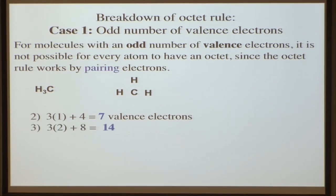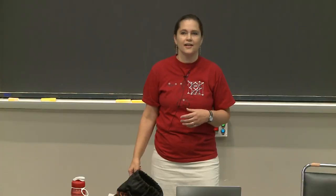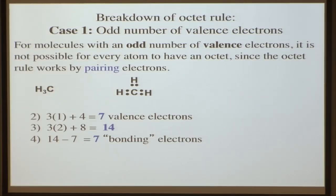To complete our octets — remember hydrogen is an exception, it only needs two electrons. There are three hydrogens, that's six. Carbon needs eight, so total you need 14. That gives us seven bonding electrons. How do you have seven bonding electrons? A bond has two electrons in it. We put two electrons for each carbon-hydrogen bond — six total. But now we have one extra, and we just put that right on the carbon.